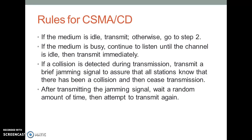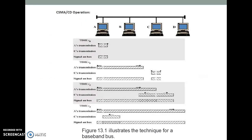If the medium is idle, transmit; otherwise, go to step 2. If the medium is busy, continue to listen until the channel is idle, then transmit immediately. If a collision is detected during transmission, transmit a brief jamming signal to ensure that all stations know that there has been a collision, and then cease transmission. After transmitting the jamming signal, wait a random amount of time, then attempt to transmit again. This figure illustrates the technique for a baseband bus.